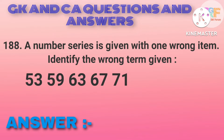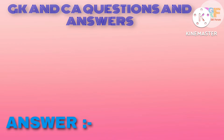In a number series, one wrong item is given. Identify the wrong term: 53, 59, 63, 67, 71. Option B: 63.